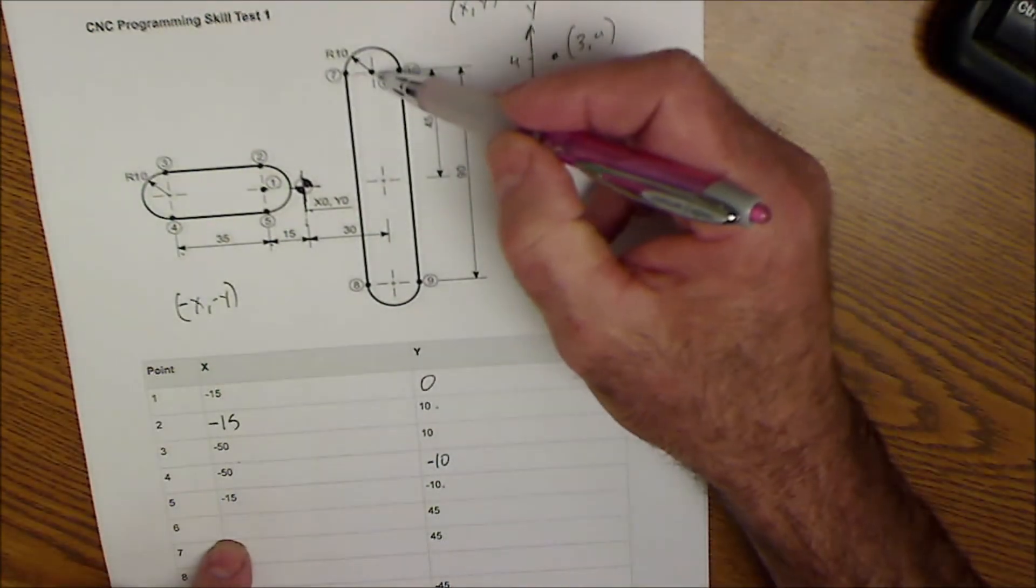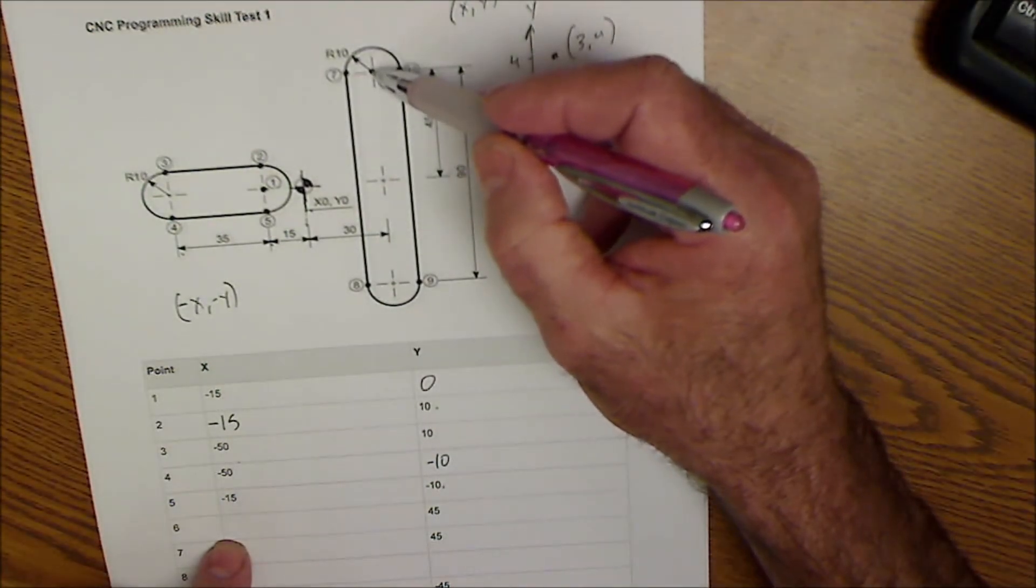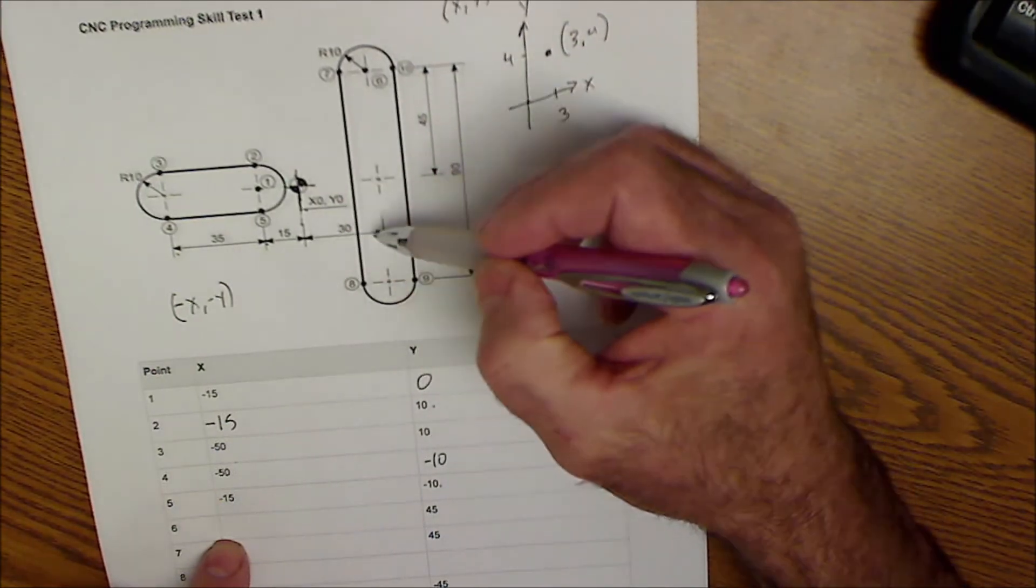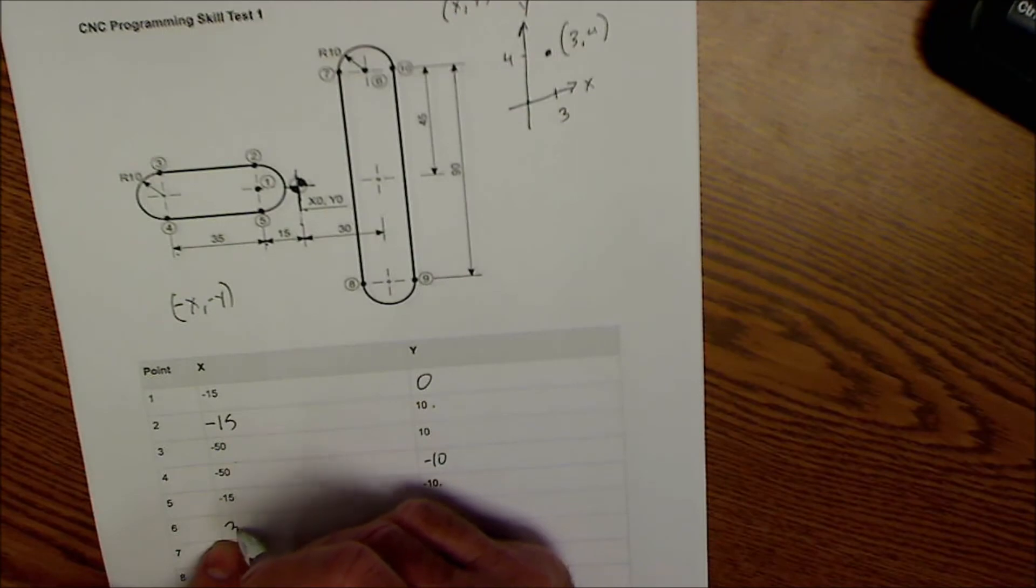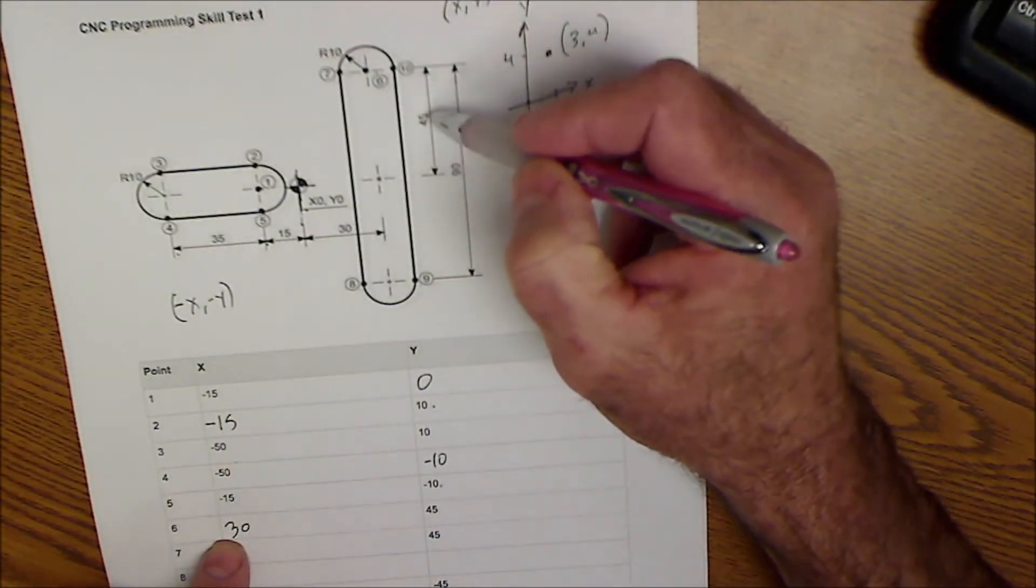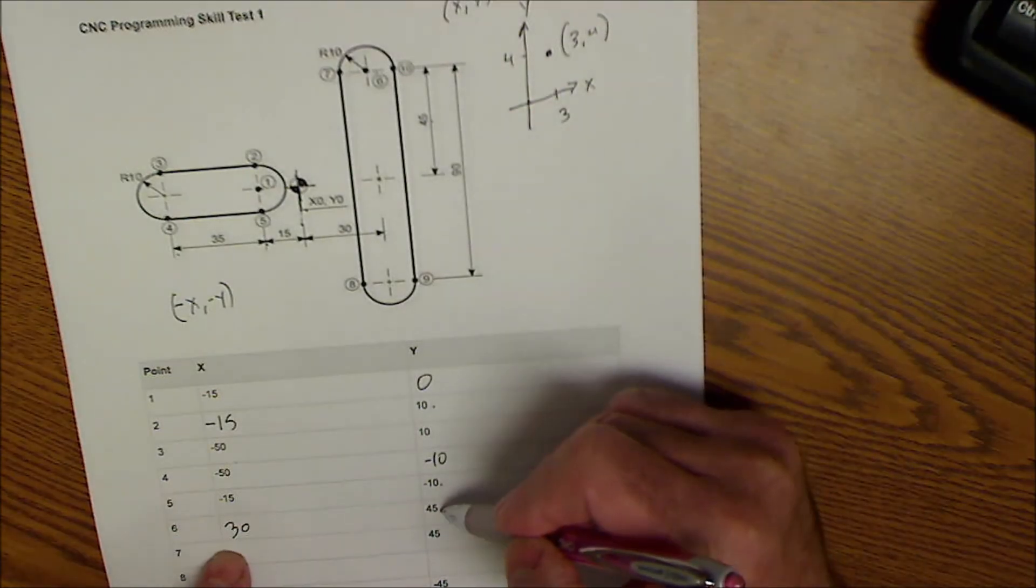Point number six is on the center line here, so I am over this amount, which is this dimension here - I'm over 30, and then I am up 45. That's where that 45 comes from.